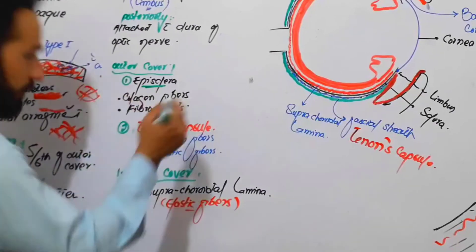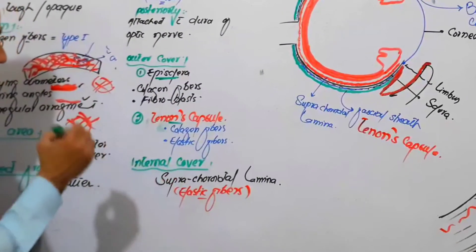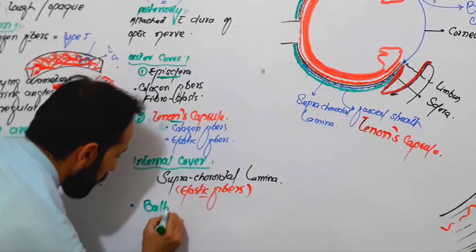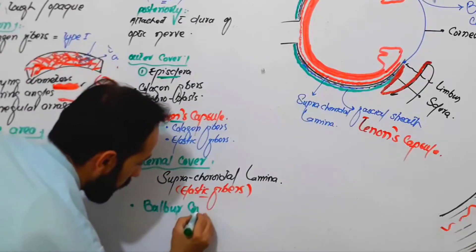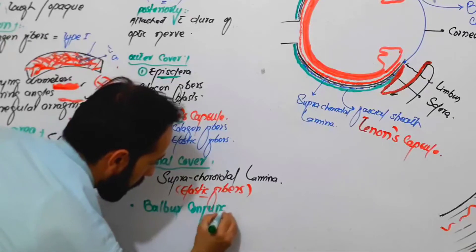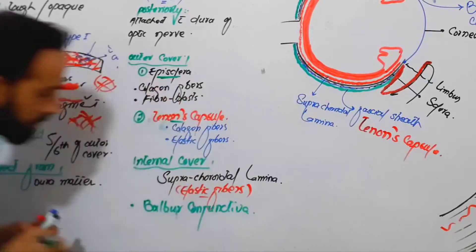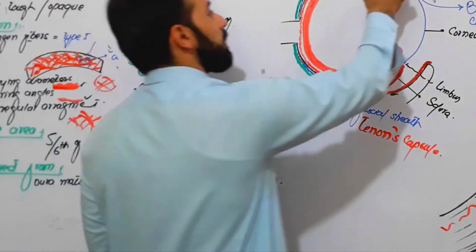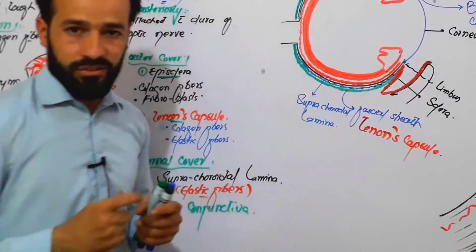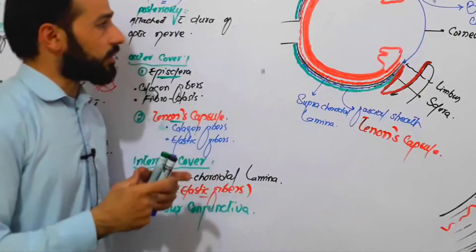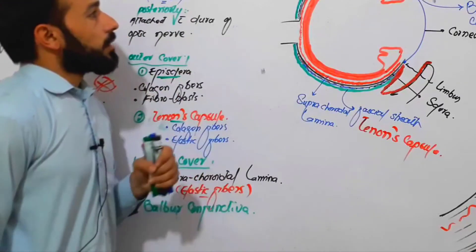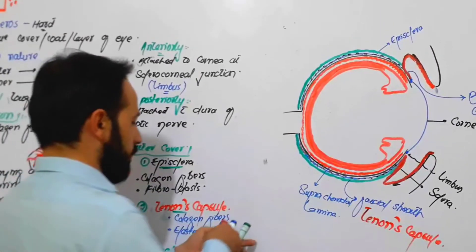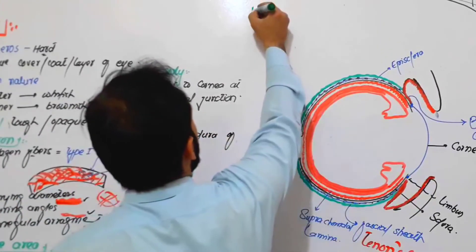So the sclera also provides attachment to the bulbar conjunctiva. The next important point about the sclera is what is its thickness. So about the thickness of the sclera, its thickness varies at different points.